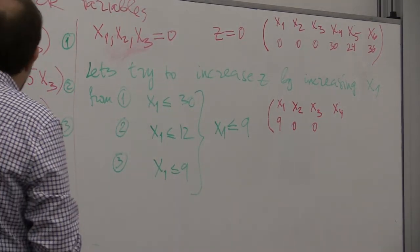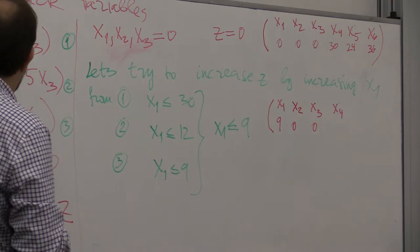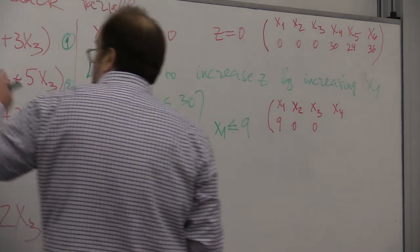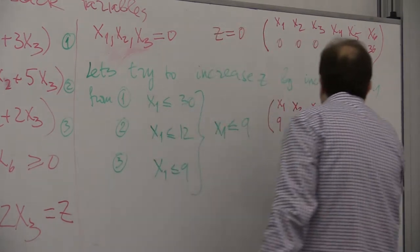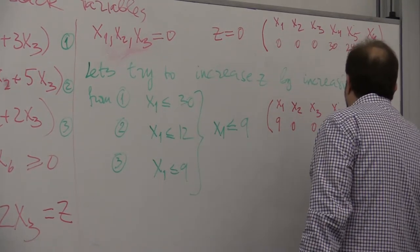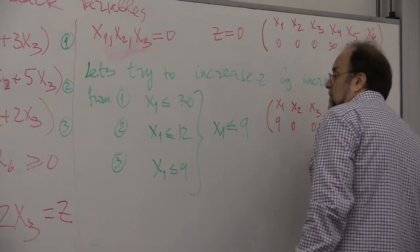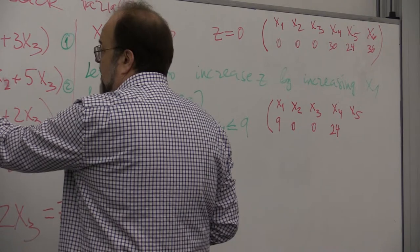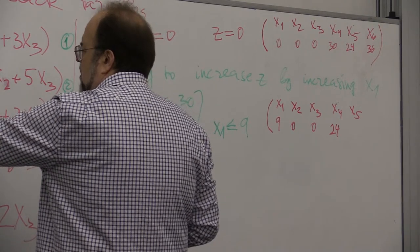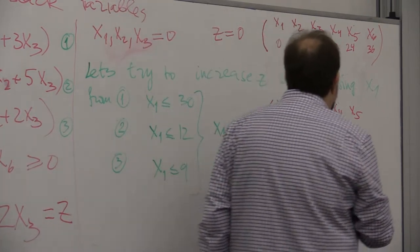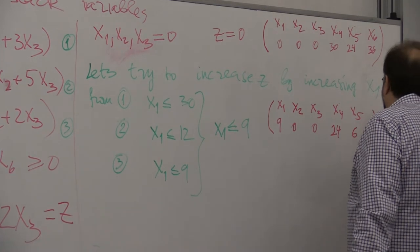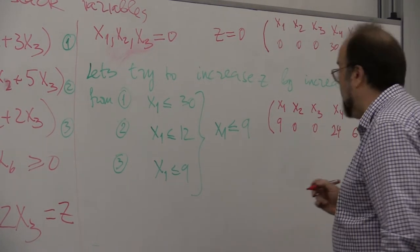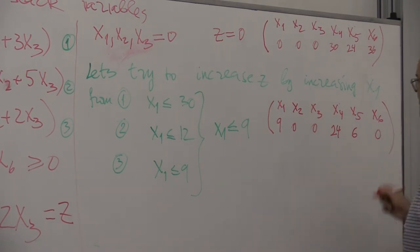x4 is, this is 0, 0, this is 9, 30 minus 9 is 21. x5, what is x5? Well, this is 0, 0, this is 9, this is 18. 24 minus 18 is 6, and x6 is 0, right?